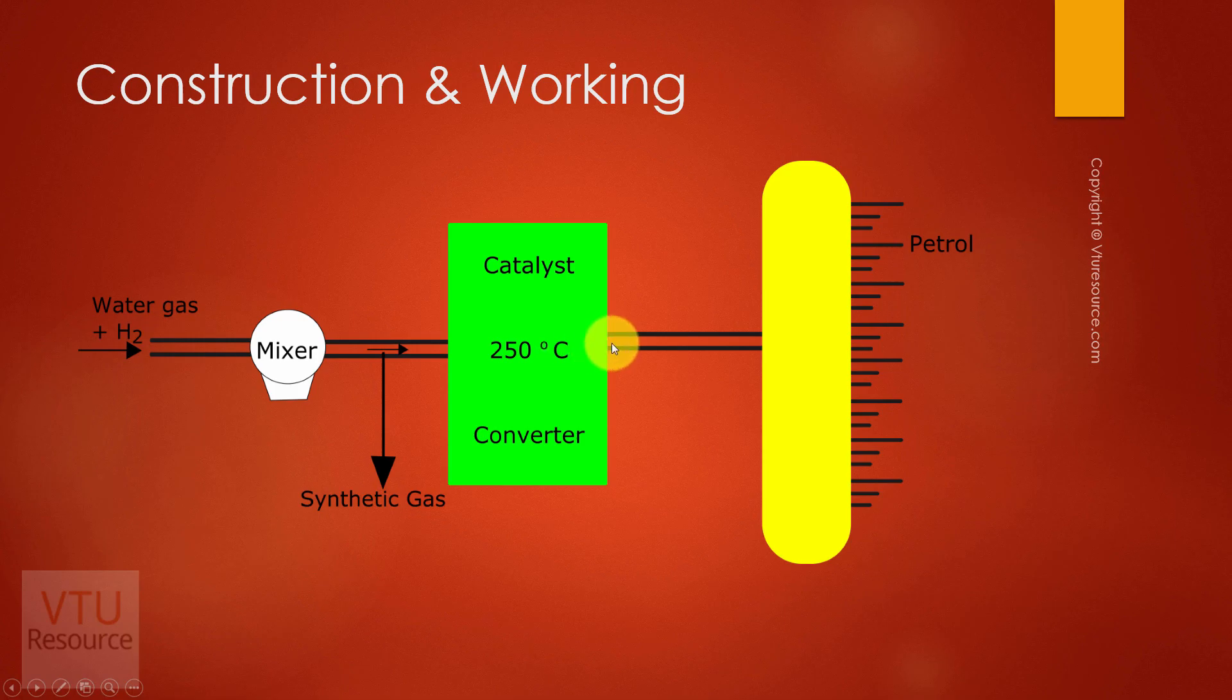The products are sent into fractional distillation column where the petrol is obtained, and this petrol is known as synthetic petrol. Now let us see how synthesis gas is hydrogenated.